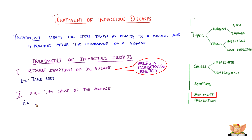So the next step is to kill the cause of the disease. We know that there are different types of infectious agents like virus, bacteria, and fungi. These are to be killed by using suitable medicines. There are separate drugs to handle each of these agents.